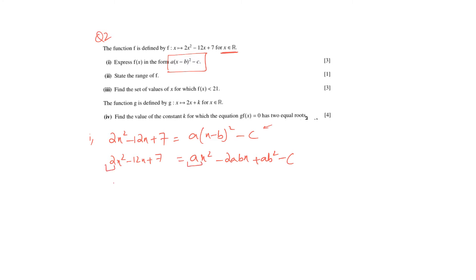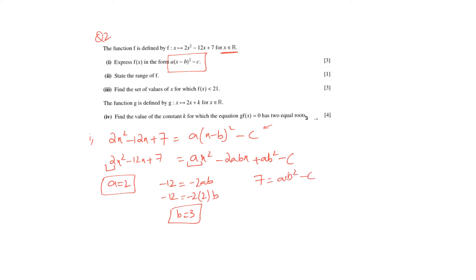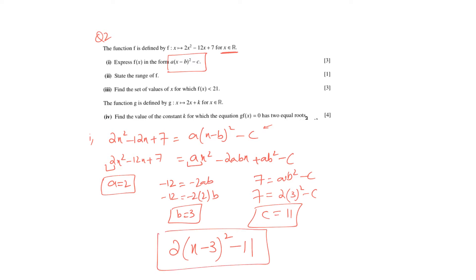Comparing the coefficient of x² gives a equals 2. Comparing the coefficient of x and substituting a equals 2 gives b equals 3. Comparing the constant term gives c equals 11. So the completing-the-square form is 2(x minus 3)² minus 11. The turning point is (3, minus 11), and it is a minimum curve.